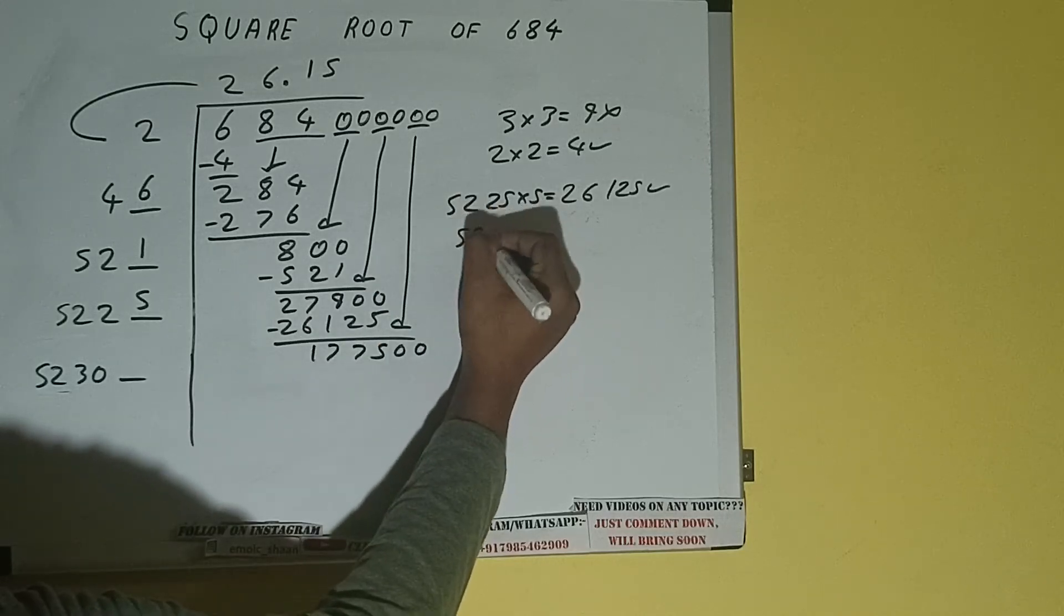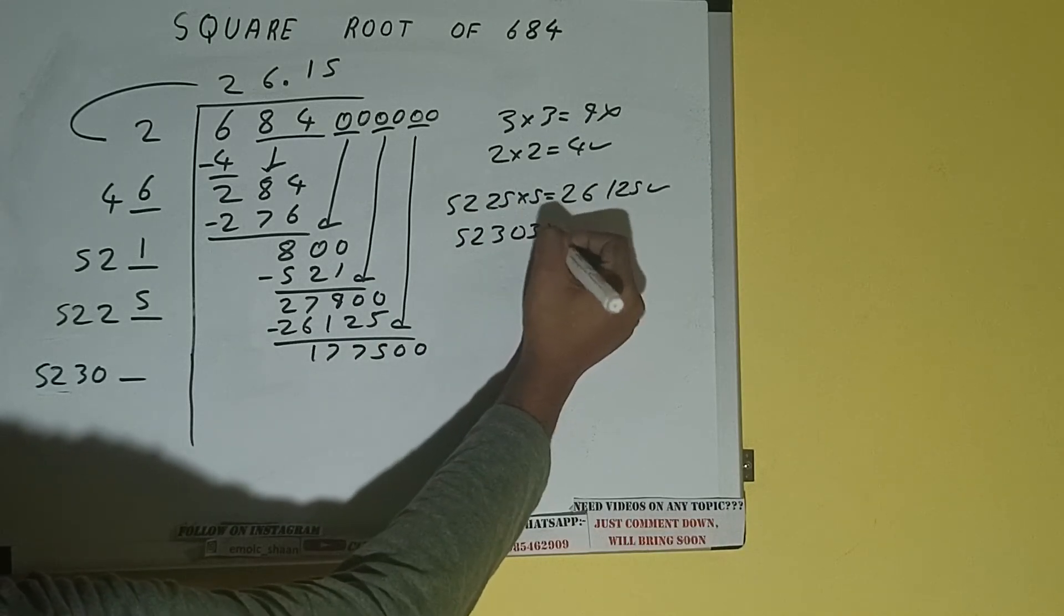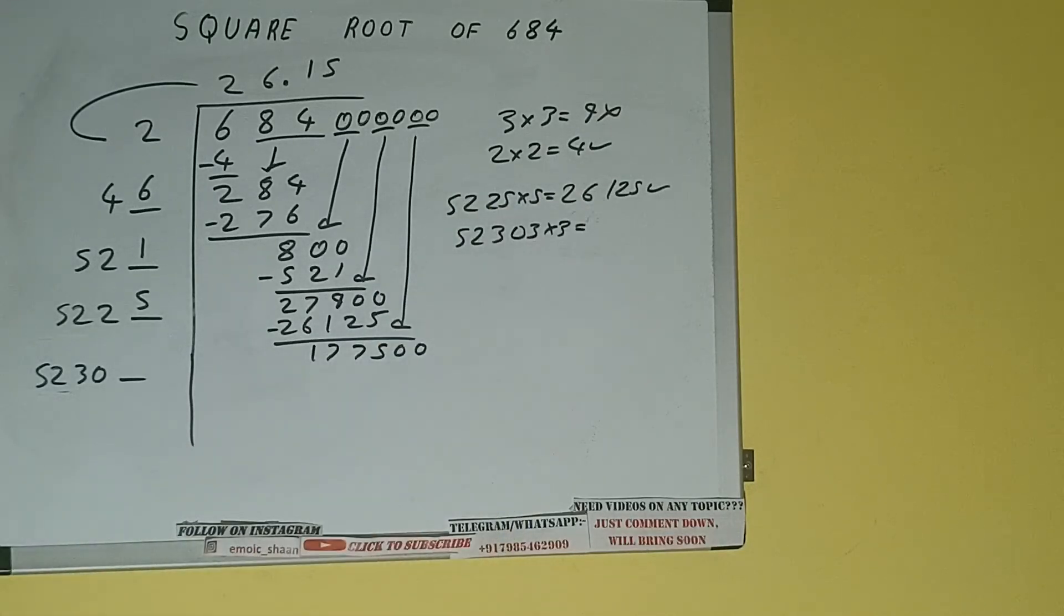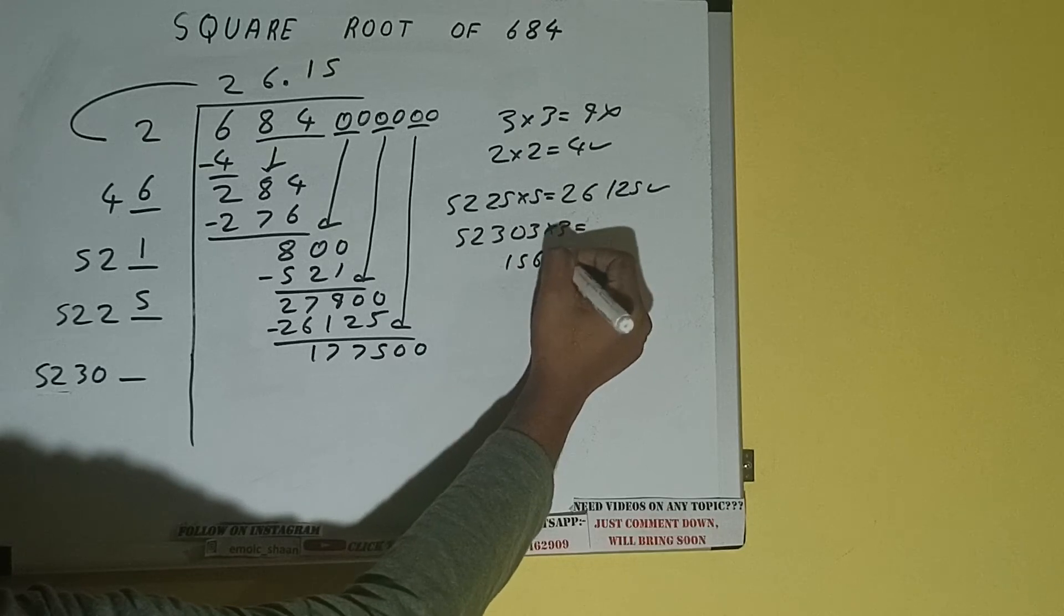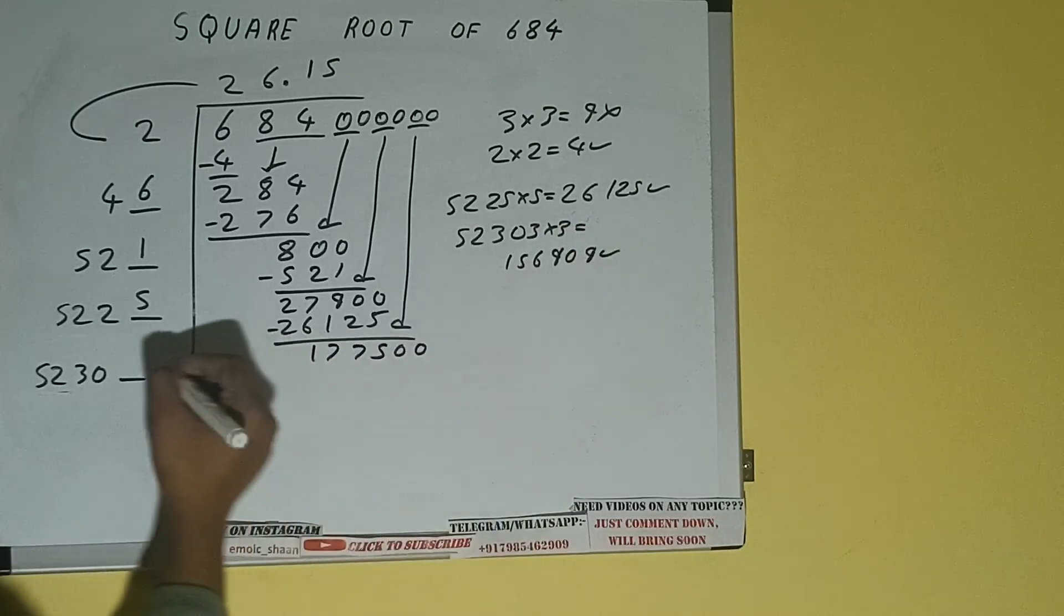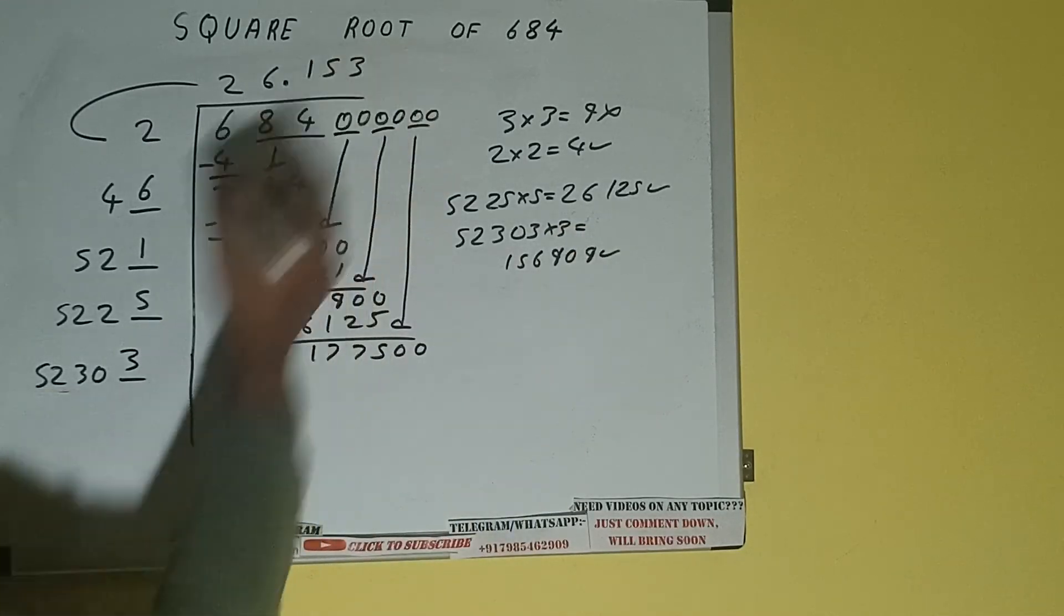So we can try 3 times: 52,303 into 3 we can try, and we'll be having 156,909, which is good to take. So 3 here and 3 here.